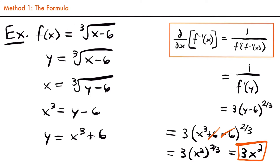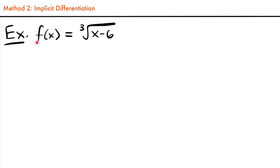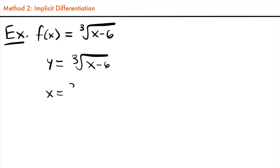Let's find this derivative again, but using a different method. We have the same function f(x) equals the cubed root of x minus six, and our second method is to use implicit differentiation. What we're going to do is first change this function to y equals the cubed root of x minus six, then go into the step of finding the inverse. But we're not going to solve for y — we're just going to take the derivative as is. We'll swap the variables as if finding the inverse, giving x equals the cubed root of y minus six.